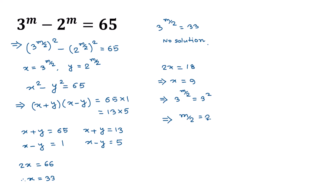Multiplying both sides by 2 gives m equals 4. So m equals 4 is the integer solution of our given equation. If you like this video, please subscribe to my channel.